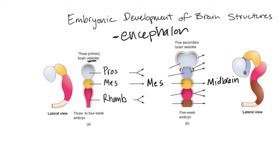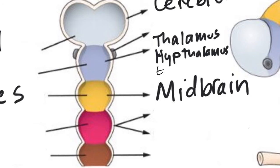The prosencephalon divides into the telencephalon and the diencephalon. The telencephalon becomes the largest part of your brain — the cerebrum, your cerebral hemispheres. The diencephalon becomes a large cluster of nuclei in the middle of your brain, which includes the thalamus, hypothalamus, and epithalamus — anything with 'thalamus' in it.